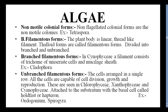Filamentous Forms have a linear, thread-like filament as the plant body. These are divided into Branched and Unbranched types. In Cyanophyceae, a filament-like trichome is present — a filament consists of a trichome, which has uniseriate cells with a mucilaginous sheath. Example: Cladophora. Unbranched Filamentous Forms have cells arranged in a single row; all cells are capable of cell division, growth, and reproduction. These are seen in Chlorophyceae, Xanthophyceae, and Cyanophyceae, attached to substratum with a basal cell called Holdfast or Haptoron. Example: Oedogonium and Spirogyra.